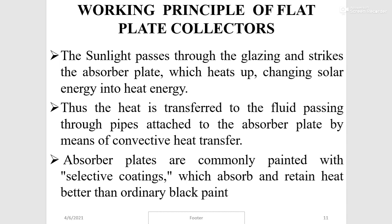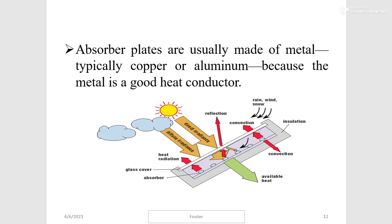The working principle of flat plate collectors: sunlight passes through the glazing and strikes the absorber plate, which heats up, converting solar energy into heat energy. The heat is transferred to the fluid passing through pipes attached to the absorber plate by means of convective heat transfer. Absorber plates are commonly painted with selective coatings which absorb and retain heat better than ordinary black paint. Absorber plates are usually made of metal — typically copper or aluminium — because metal is a good conductor of heat.